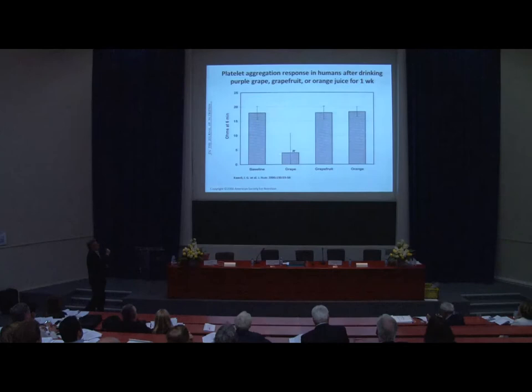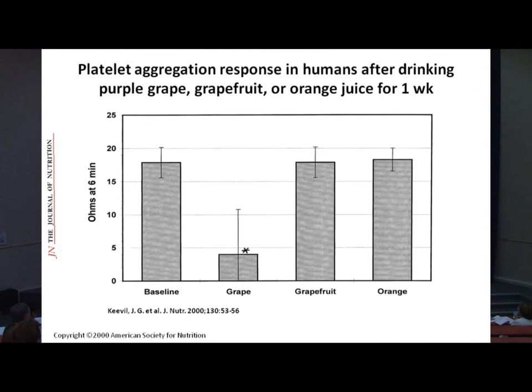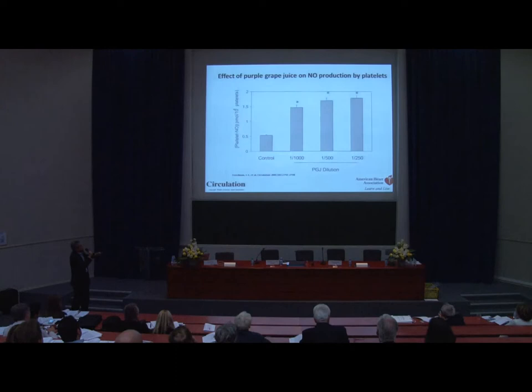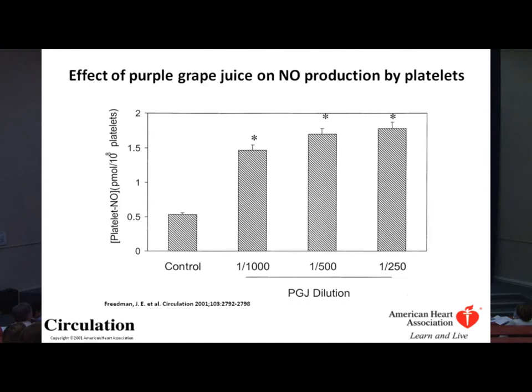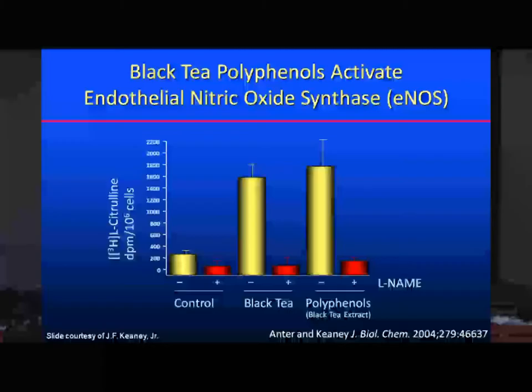Similarly, platelet aggregation, which is also inhibited by nitric oxide, was examined in a human study looking at purple grape juice versus grapefruit or orange juice consumption. Purple grape juice is high in flavon-3-ols, in contrast to grapefruit and orange juice. After one week of purple grape juice consumption, you see a very nice inhibition of platelet aggregation — not seen with grapefruit or orange juice. Incubating platelets with purple grape juice shows they produce nitric oxide in a dose-dependent manner, hence inhibiting platelet aggregation.